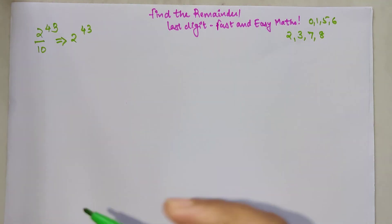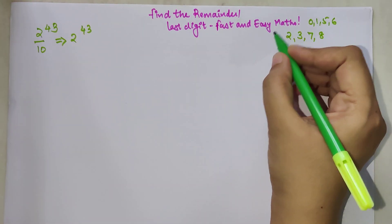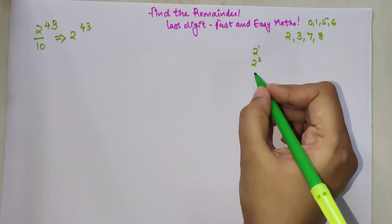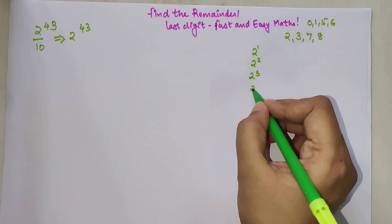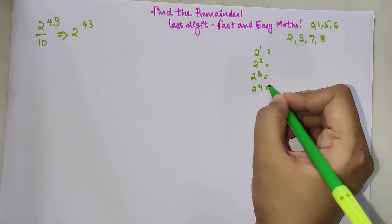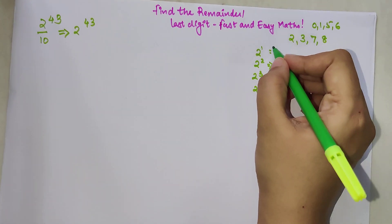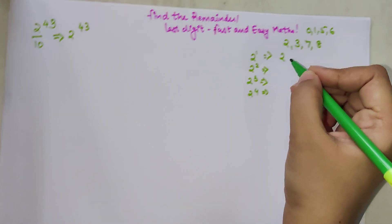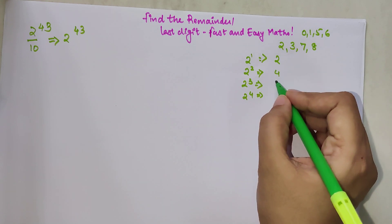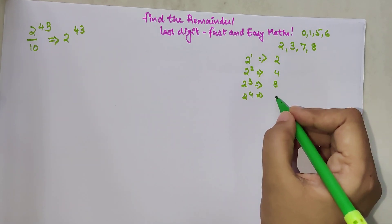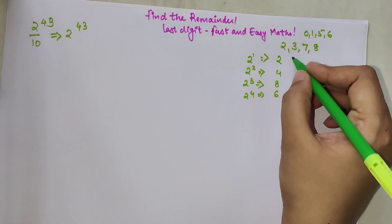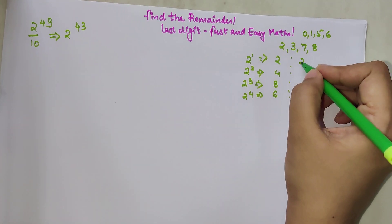First we have to understand something called the power cycle. Let's look at 2 raised to 1, 2 raised to 2, 2 raised to 3, and 2 raised to 4. The last digits are: 2 raised to 1 = 2, 2 raised to 2 = 4, 2 raised to 3 = 8, and 2 raised to 4 = 16, so last digit is 6.